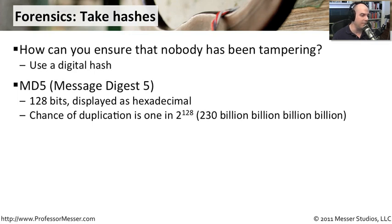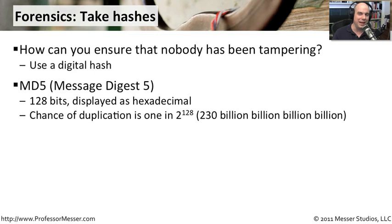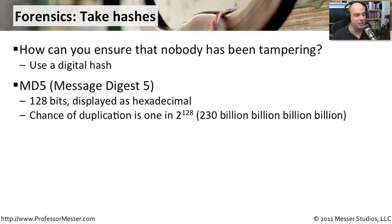This MD5 hash is 128 bits long and it is displayed as a hexadecimal string. There is an interesting chance of duplication: one in two to the 128th power — so we're talking about 230 billion billion billion billion to one chance that a change to a file would produce exactly the same fingerprint as the original. So it's pretty much impossible to have some modification to a file and have the fingerprint turn out to be exactly the same. In reality, you're never going to hit this — the statistical odds are staggering.